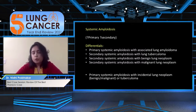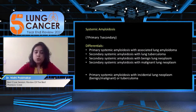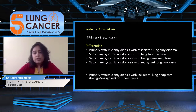Lung tuberculoma was considered but did not fit well — there were no fibrosis or typical TB changes, though granulation tissue was seen on biopsy. Another differential was secondary systemic amyloidosis secondary to a benign or malignant lung neoplasm.